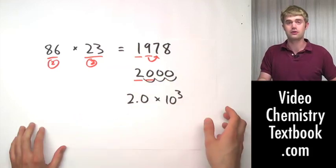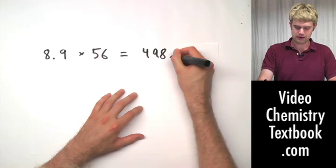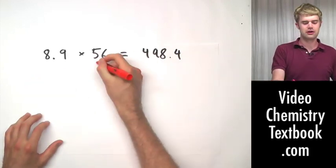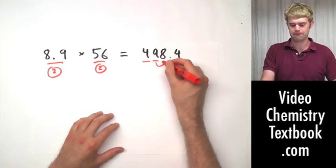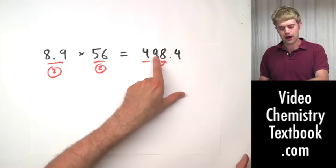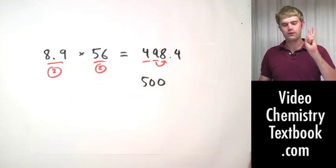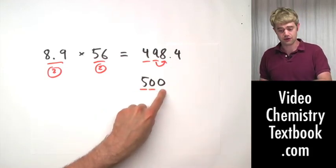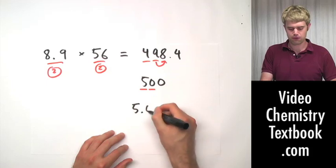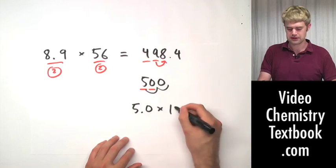This one and this one are significant but the others are not. One final example: 8.9 times 56 gives 498.4. There are two significant figures in both of the numbers I'm multiplying together, which means I should round this to two significant figures. The 8 means that the 9 should round up, which means the 5 goes up. So I get 500, but there should be only two significant figures in my final answer. I keep the 5 and I keep the zero — this zero is significant, the zero to the right is not. So I write this as 5.0, two significant figures, move the decimal place over 1, 2 times 10 to the second.